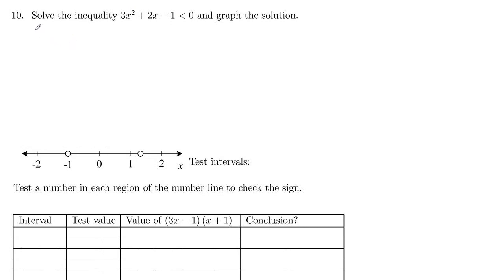So we first want to solve the equation here. We want to first solve 3x squared plus 2x minus 1 equals 0 to find those key numbers.